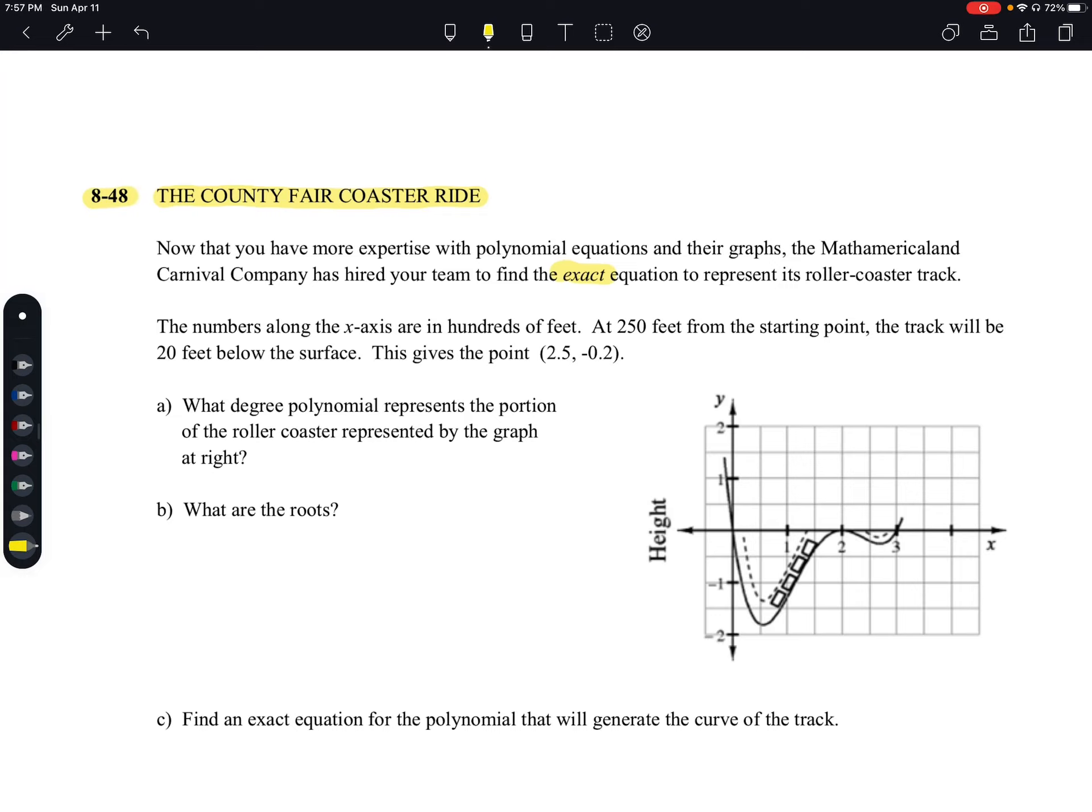The numbers along the x-axis are in hundreds of feet. At 250 feet from the starting point, the track will be 20 feet below the surface. This gives us the point (2.5, -0.2). So you'll see the stretch factor, the scale factor. So 250 feet is 2.5 and 20 feet below the surface is negative 0.2.